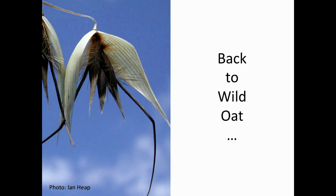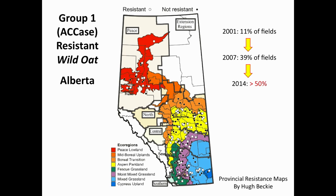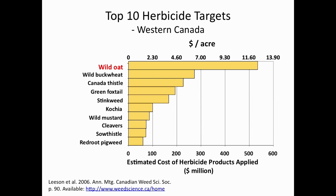Going back to wild oat: in Alberta, it's our most resistant species in terms of herbicide resistance. Looking at the resistance maps provided by Hugh Becky, the open circles show resistant sites and the black circles are not resistant—and see how rapidly that's changed in very few years. In the early 2000s, 11% of fields in a random survey were resistant; now we're over 50%. The reason is we apply so many wild oat herbicides—it's the number one herbicide in terms of dollars per acre spent. We apply more herbicide, we have lots of wild oat, we get lots of resistance.